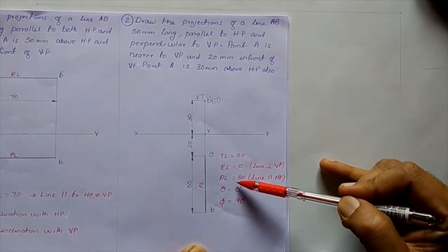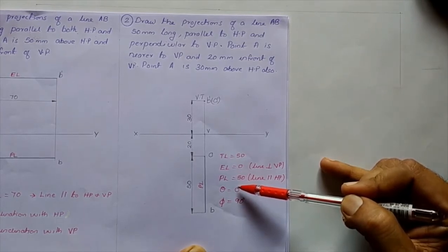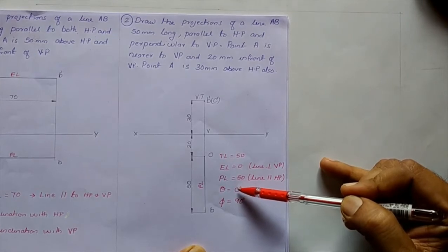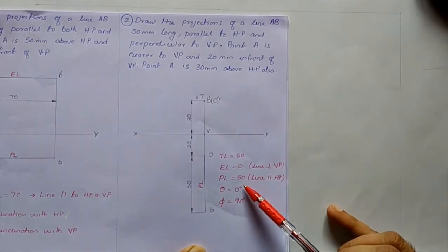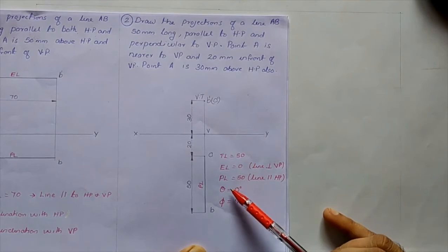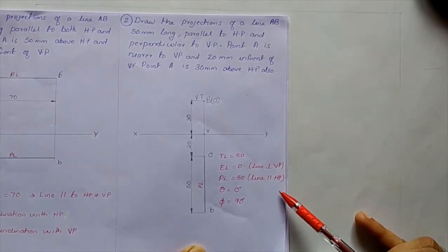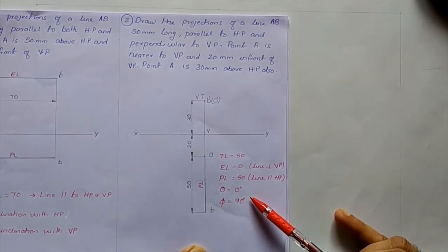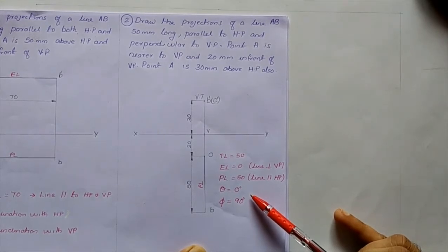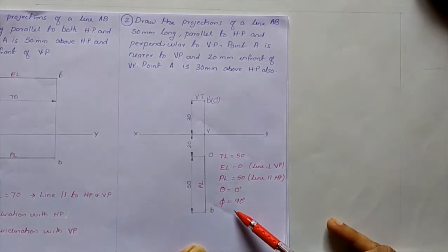The length of the top view (plan length) equals the true length of 50 mm, because the line is parallel to HP. Whenever a line is parallel to HP, its top view carries the true length. So plan length = 50 mm = true length. The value of theta is 0 (line is parallel to HP), and the value of phi is 90° (line is perpendicular to VP).